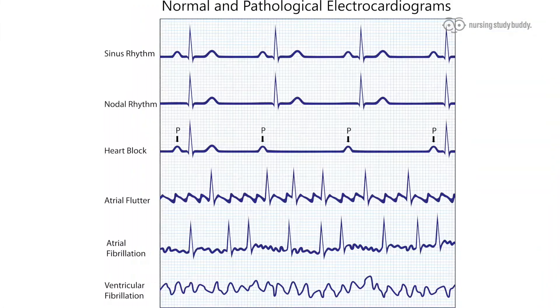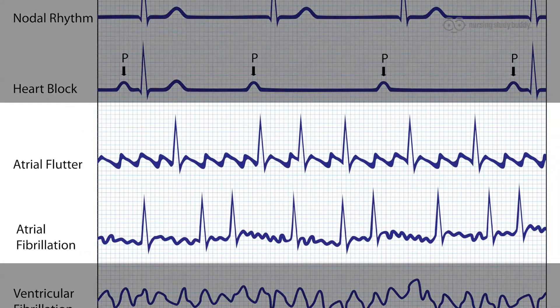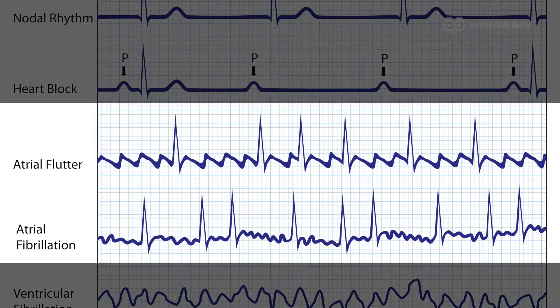Starting off, atrial rhythms are really just slight misfires in the heart that can throw things off later on in our conduction. We have three main types: atrial flutter, atrial fibrillation, and a wandering atrial pacemaker.